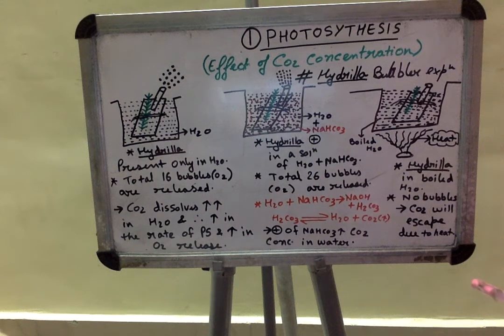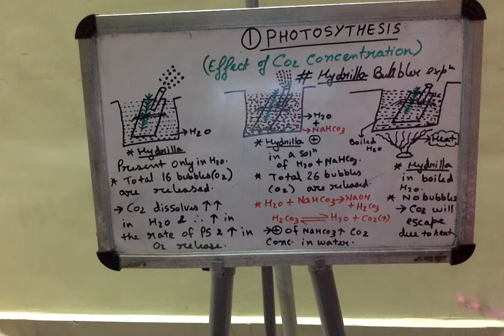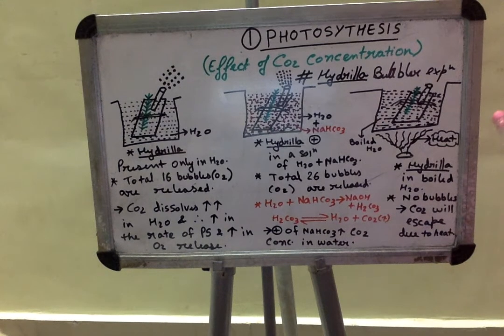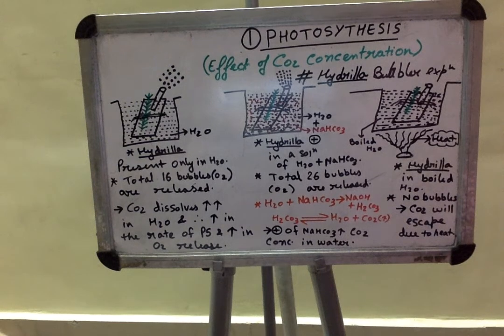This is the last topic defining the effect of all the factors on the rate of photosynthesis, and today's topic is effect of concentration of carbon dioxide on the rate of photosynthesis.